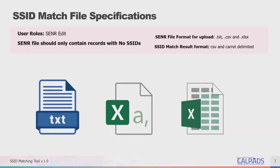SSID match file specifications. To access the SSID match tool, the user must have the SENR edit role on their account. The file submitted with your candidates has to follow the SENR format and conform to the specifications for uploading the SENR file, meaning it must be either a .txt file, a .csv file, or a .xlsx Excel spreadsheet. The file that is returned — the SSID match results file — has its own specific format; it's a caret-delimited file, similar to all other extract structures coming from CALPADS.